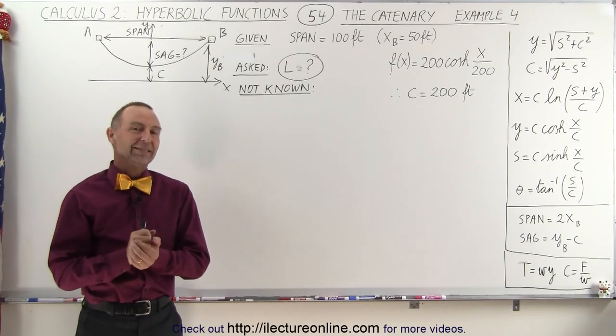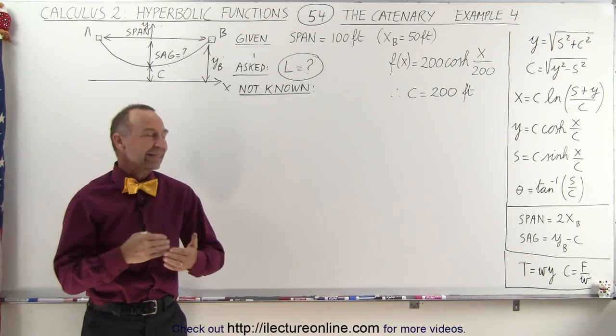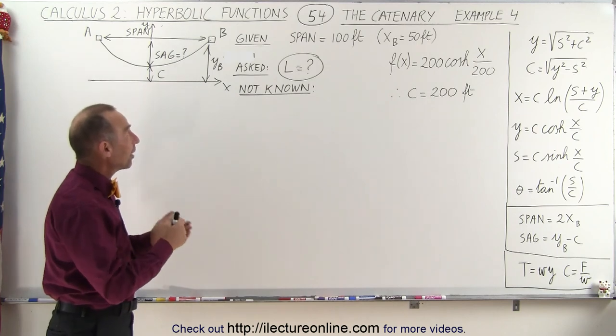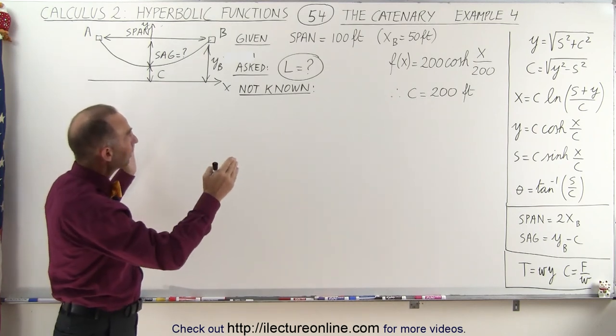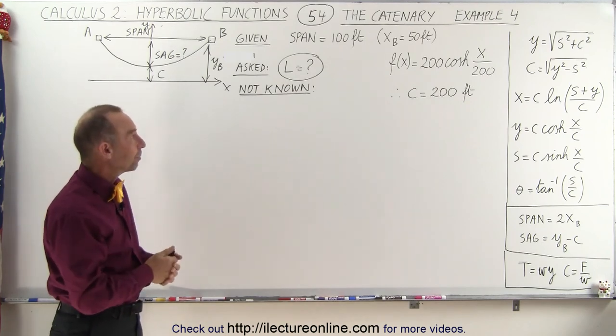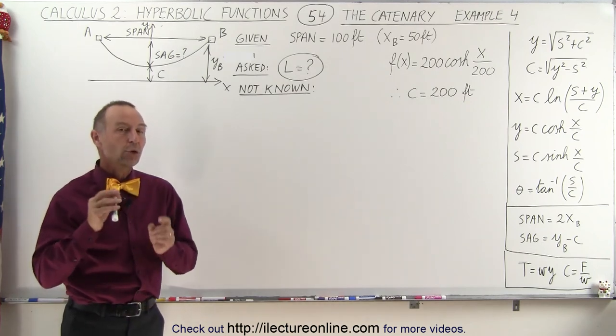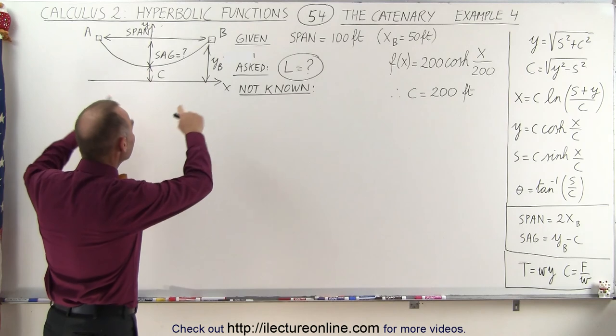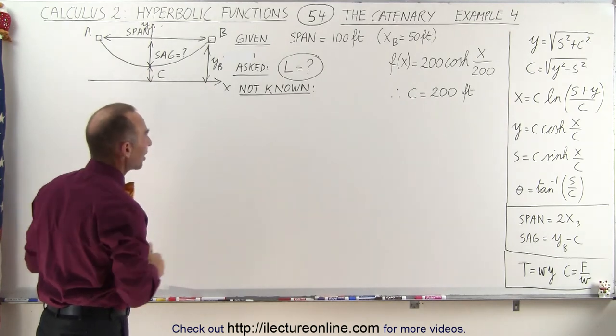Welcome to iLectureOnline. In our next example of the catenary problem, we're given the following. We're given the span, and so by knowing the span, we will also know x sub b, which is half the span, and we're also given the equation describing the actual function, the actual shape of the cable.